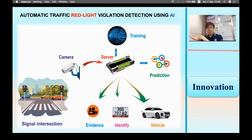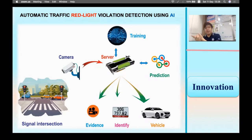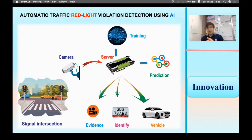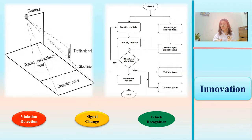We use a camera installed on the side of the road, looking at the intersection with traffic lights. We then use a convolutional neural network to identify vehicles and image processing to identify whether the traffic light is red or not. Once a violation is detected, the information of the vehicle is extracted. Our invention mainly consists of three parts: vehicle violation detection, traffic signal change monitoring, and vehicle recognition.